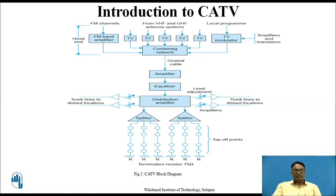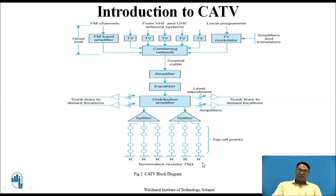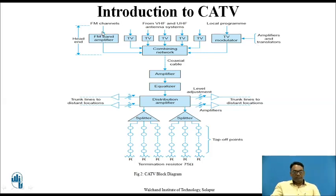Similarly, this is the block diagram for CATV. Here, as you can see, it consists of an FM band amplifier, then different televisions having UHF and VHF antenna systems. Then there is a local programmer given to a TV modulator, then a combining network. Through coaxial cable, the TV signals are given to an amplifier equalizer where pre-emphasis and de-emphasis of the signal takes place. Then there is a distribution amplifier which gives output to a splitter, and then there are resistors with a 75 ohm terminator. These are the tap-off points, amplifiers, and trunk lines. These amplifiers and translators together are also known as the head end, which provides the input to the CATV system.